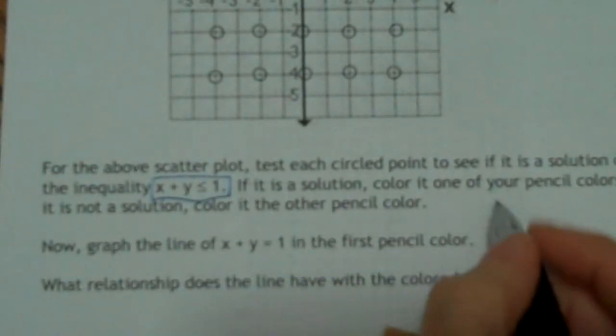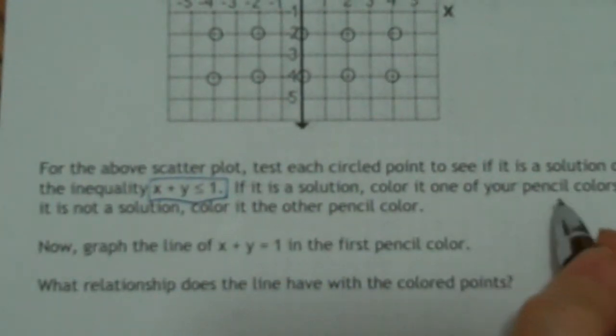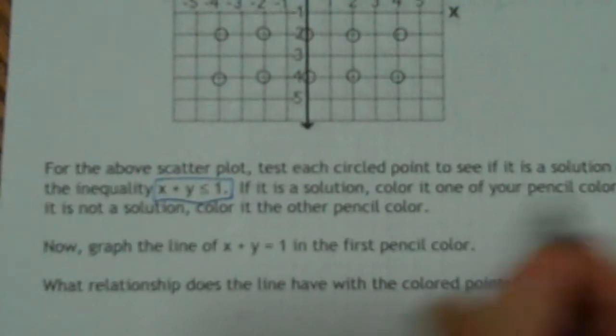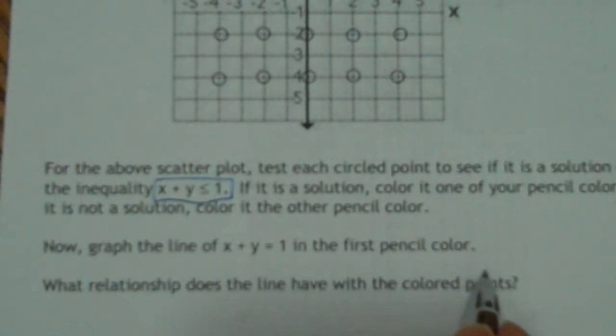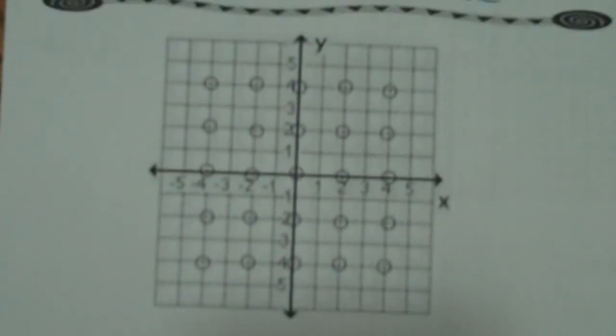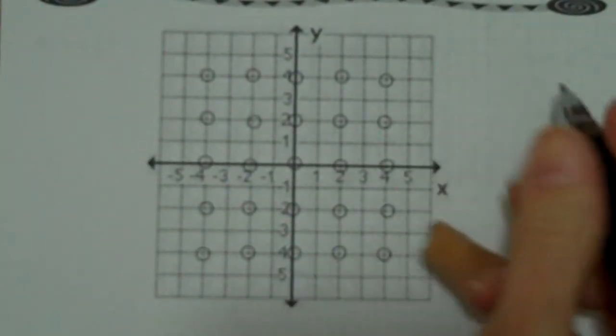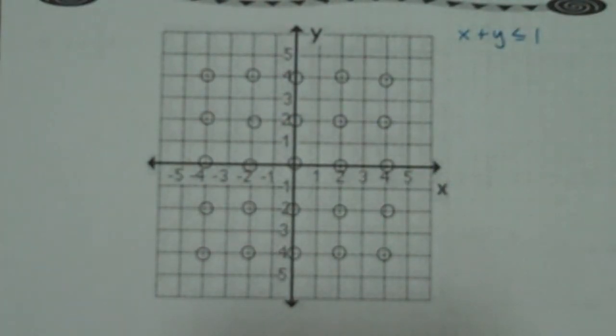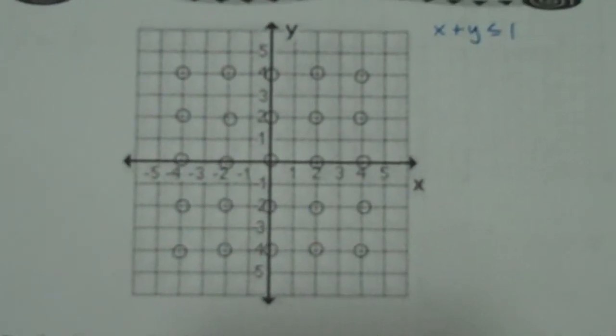So that's the inequality we want to use. If it's a solution, color it one of your pencil colors. So you're going to need two different colored pencils for this. If you don't have them, go get them now. If it's a solution, color it one color. If it's not a solution, color it another. And now we're going to stop right there. So let's go back and do those. We're going to have to test each point. And remember, it was x plus y is less than or equal to 1. So I'm going to show you how to do a couple of them, and then I'll just fill in the rest of the dots.